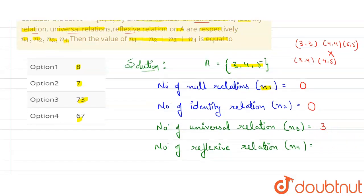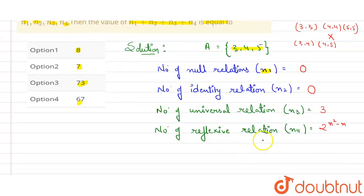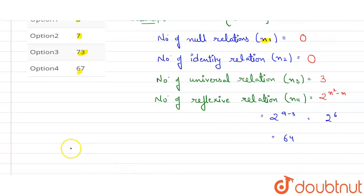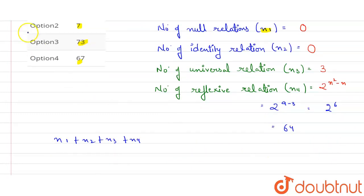For the reflexive relation, we use the formula 2 raised to the power (n² - n), where n is the number of elements. Putting n = 3: 2^(9 - 3) = 2^6 = 64. So N4 = 64. Now putting all values: N1 + N2 + N3 + N4 = 0 + 0 + 3 + 64.